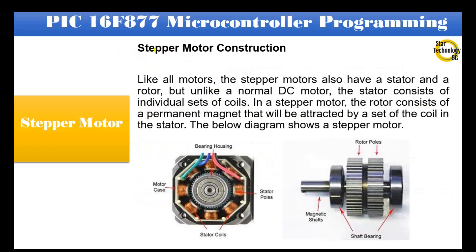Stepper motor construction. Like all motors, stepper motors also have a stator and a rotor, but unlike a normal DC motor, the stator consists of individual sets of coils. In a stepper motor, the rotor consists of a permanent magnet that will be attracted by a set of coils in the stator. The below diagram shows a stepper motor.